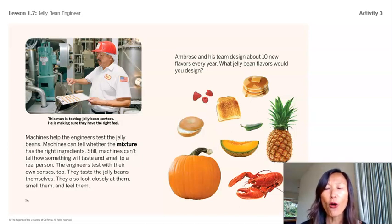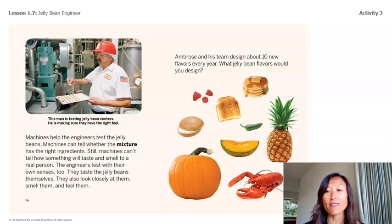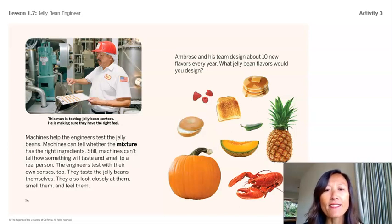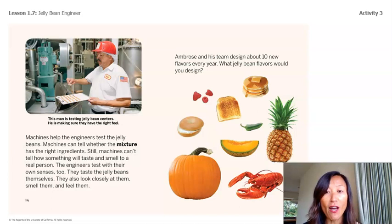Ambrose and his team design about 10 new flavors every year. So how do jelly bean engineers test the properties of the jelly beans? They use their senses — smell, taste, and feel — and machines to make sure the mixture has the right ingredients. Why do they test over and over? To make sure they taste right and to know if they need to change the ingredients. Some jelly beans are soft, some are hard, some taste like grass, vomit, or strawberry.